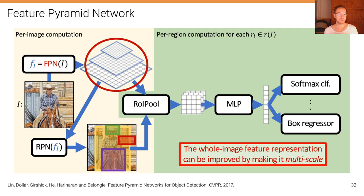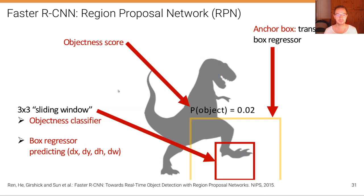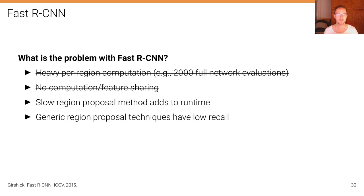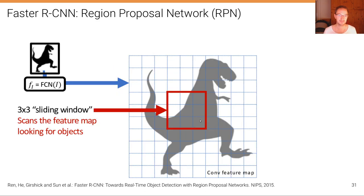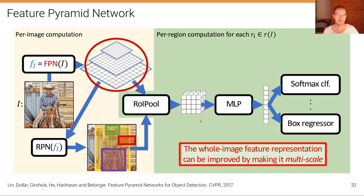Faster RCNN has basically removed the problem of slow region proposal methods and generic techniques with low recall. It is not limited in recall and runtime has increased dramatically — we now have a method that runs at around 10 frames per second.